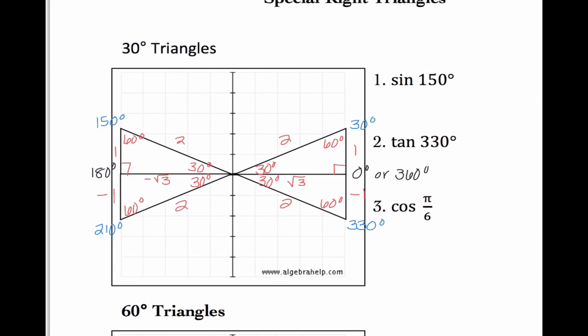So some things that we see here — all four of these triangles have a reference angle of 30 degrees. Those similarities make our life way easier, because if I can just figure out what the reference angle is, I know how to draw out the triangle. So now let's actually go through and do these problems. Sine of 150: I know this is my reference angle, sine is opposite over hypotenuse, so my answer is 1 over 2. And if we think back to all students take calculus, it makes sense that in quadrant 2, sine would be positive.